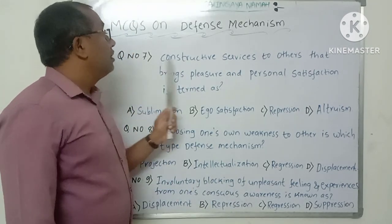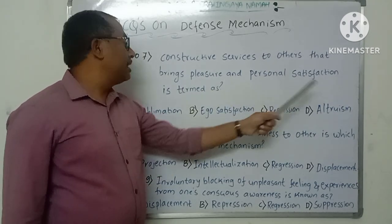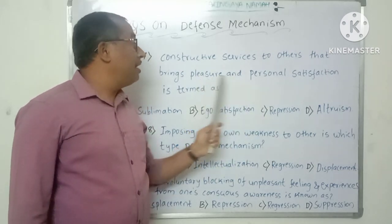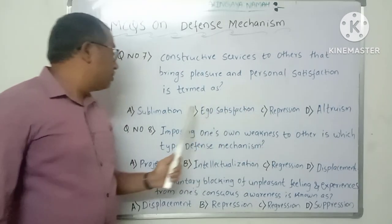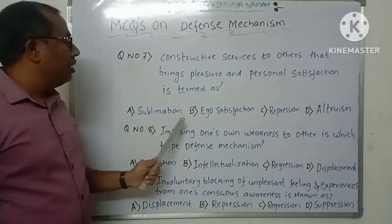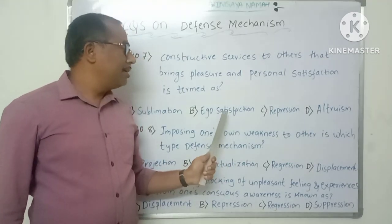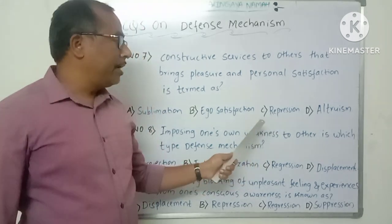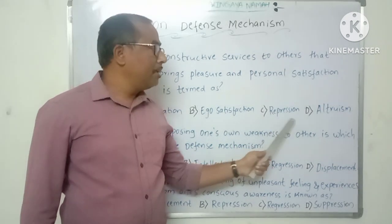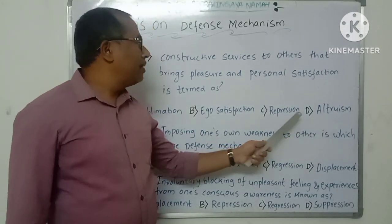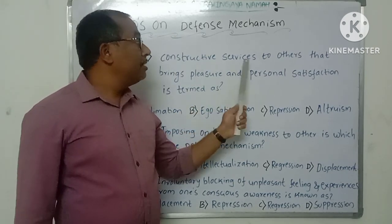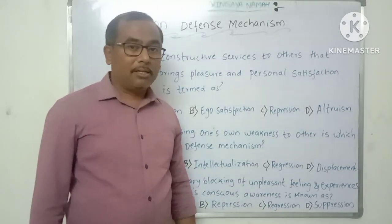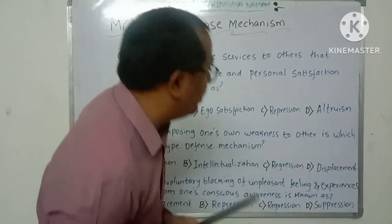Question number seven: Constructive service to others that brings pleasure and personal satisfaction is termed as what? The person does service to others and gets pleasure and satisfaction from it. Sublimation is not the right answer. Ego satisfaction is not the right answer. Repression — involuntarily forgetting a stressful situation — is also not the right answer. Altruism is the correct answer. In altruism, when a person does service to others and gets pleasure and satisfaction from doing so, that is known as altruism.